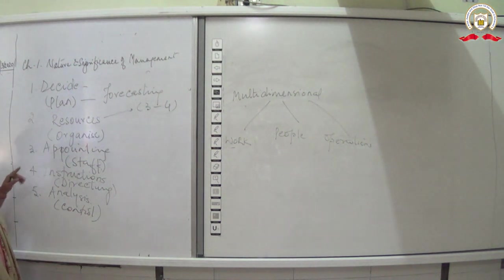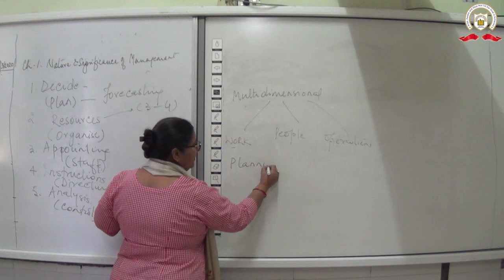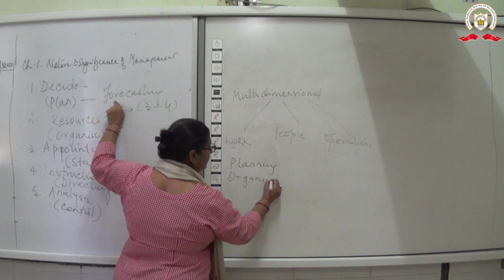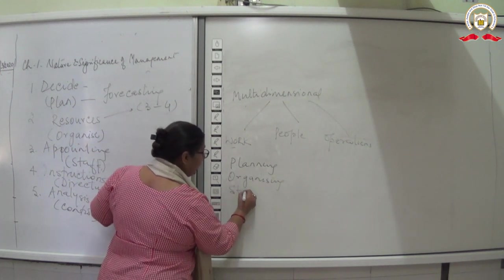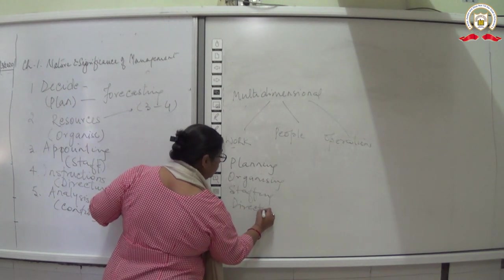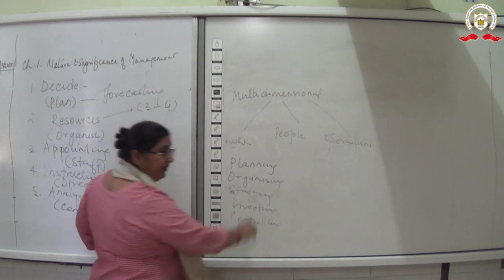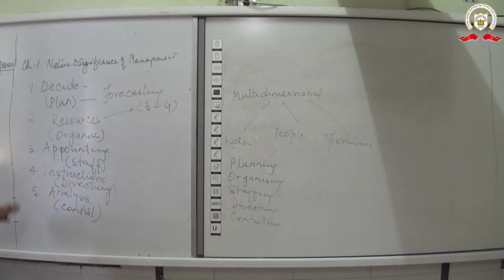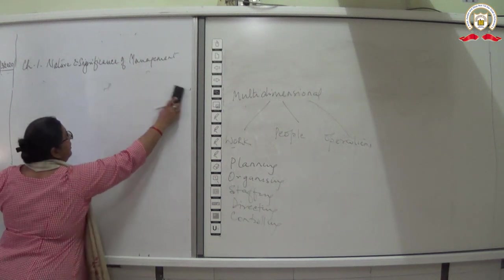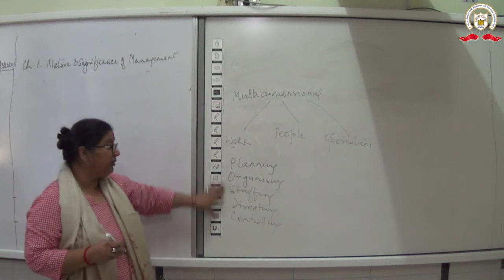That analysis — checking whether your actual performance matches your planned performance — is called controlling. So there are five functions of management: planning, organizing, staffing, directing, and controlling. Now I will give you the value words or keywords for each, because identification questions can come in your board exam.